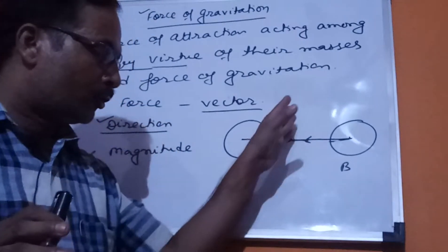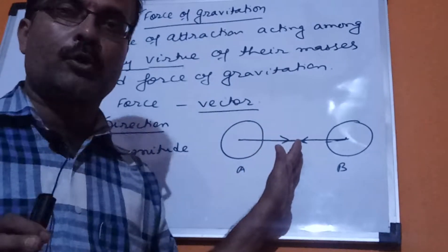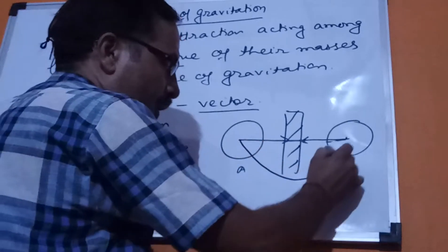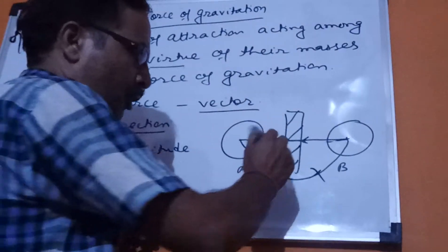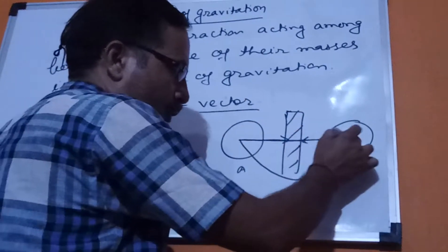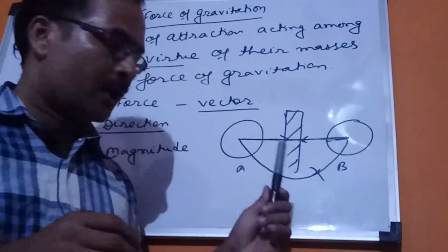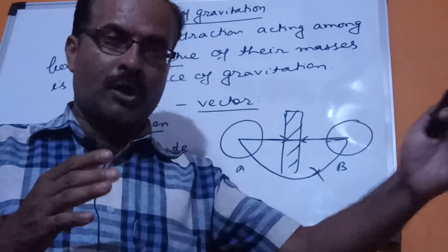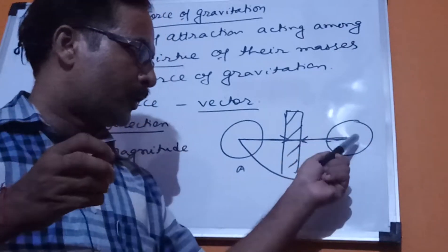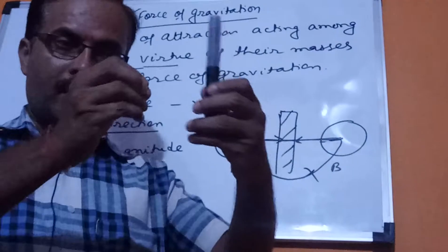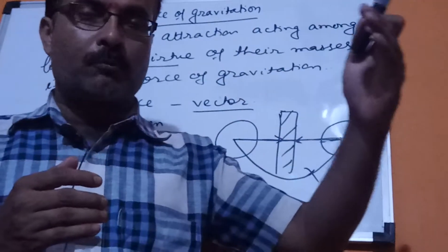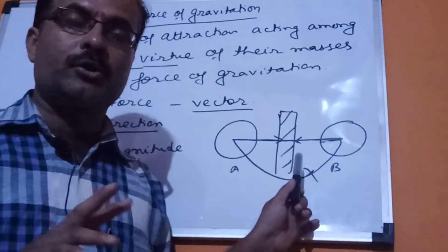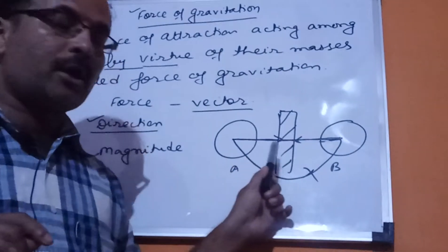Now, don't be confused — suppose there is an obstacle like a wall in between. That does not mean the force of gravitation won't act. Any obstacle is there, no matter — the force will still act along the straight line only. For example, your body has a mass and your mother's body also has mass. If you are in a study room and your mother is in the kitchen, the straight line joining their centers shows the direction of the force of gravitation. Walls in between don't matter; the force of gravitation is not affected by obstacles.